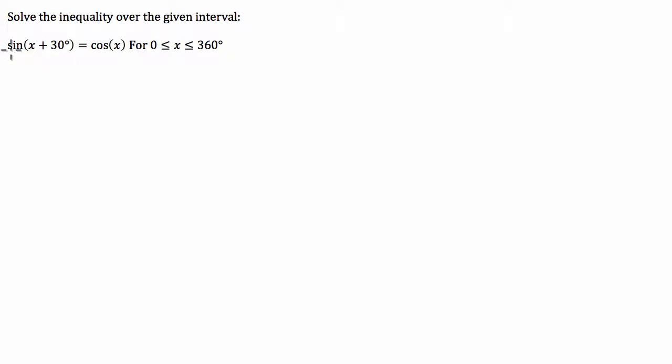What we're going to do to start with is expand sine of x plus 30. This angle sum here, we're going to expand it using a trigonometric identity.